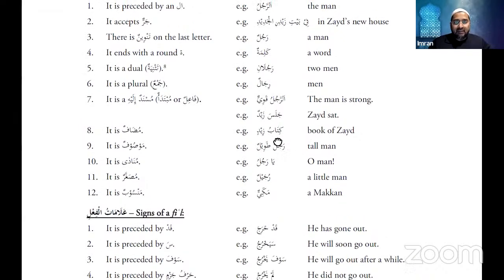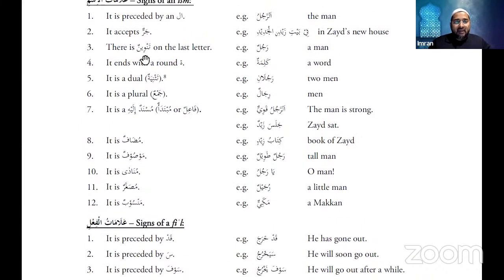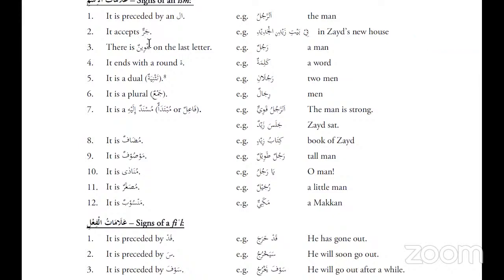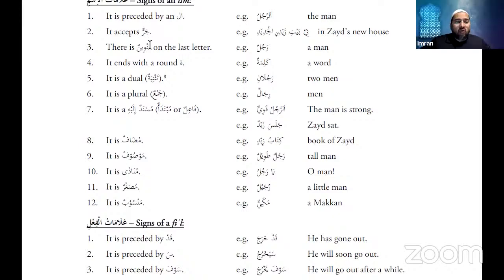The second sign of a noun: it accepts jarr. Jarr is when a noun receives a kasra-tanwin or a kasra.